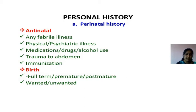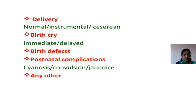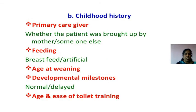In the antenatal period, we note any febrile illnesses, physical and psychiatric illnesses, medication, drug or alcohol use, trauma to abdomen, or immunization. For birth: whether full term, premature, or post-mature; whether the child was wanted or unwanted; type of delivery — normal, instrumental, or caesarean. Birth cry — immediate or delayed, any birth defects, and postnatal complications such as cyanosis, convulsions, jaundice, or any other complications.